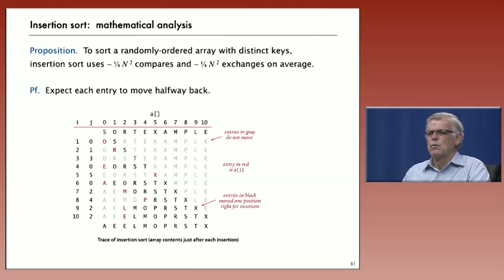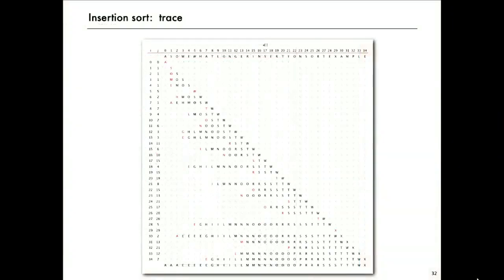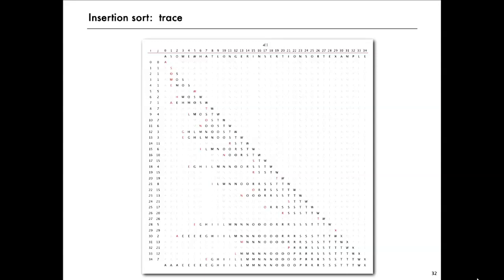And again, you can get a feeling for where the proposition comes from by looking at this n by n trace. Again, the black elements are the ones that we compare, and actually they're also the exchanges. And the red one is the one that's finally put into place. And you can see that for a large array that's randomly ordered, the element that we put into place is going to go about halfway back on the average. So that means about half of the elements below the diagonal are going to be black on the average. There's n squared over 2 below the diagonal. Half of that is n squared over 4. The analysis, the exact analysis, is not much more detailed than that. This is a bigger trace that shows, again, about half the elements below the diagonal are involved in the sort.